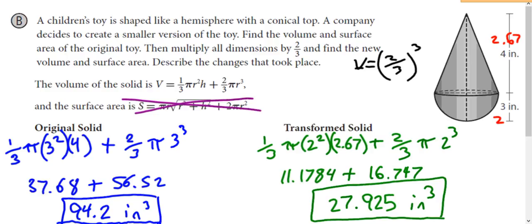According to our formula, the volume scale factor should be the scale factor cubed. Two cubed is 8 and three cubed is 27. So take the original volume 94.2 times 8 over 27, and we should get 27.925. And 94.2 times 8 over 27 gives 27.91 — just off due to rounding. So again, if the dimensions change by A, the volume changes by A cubed.